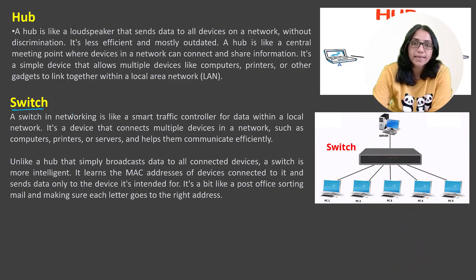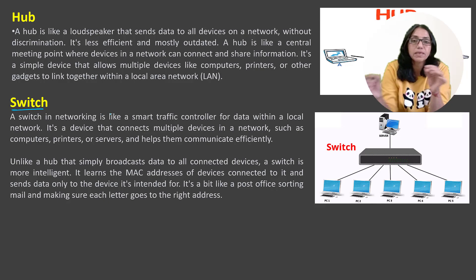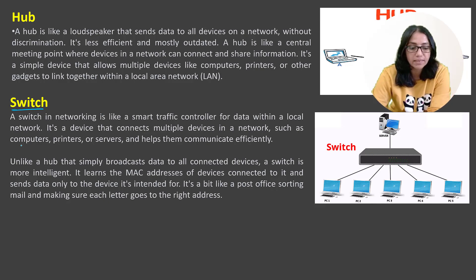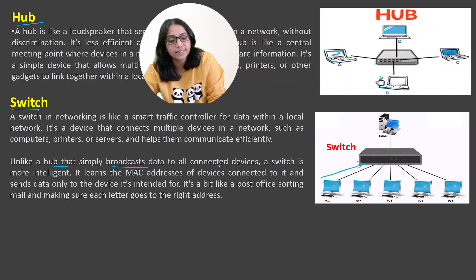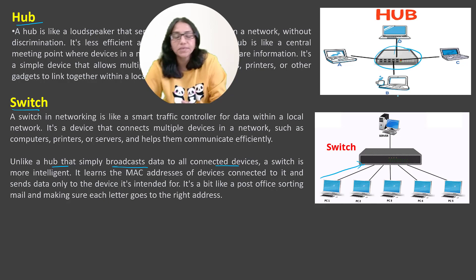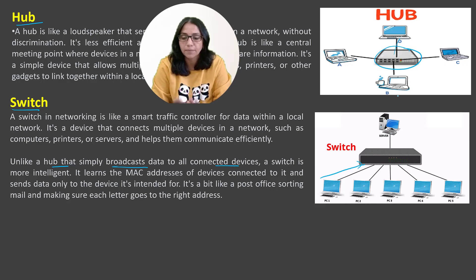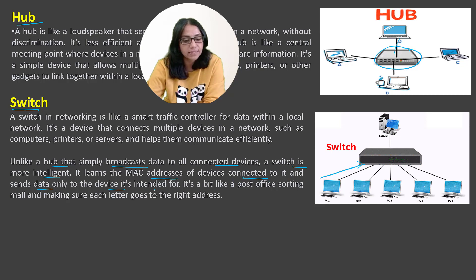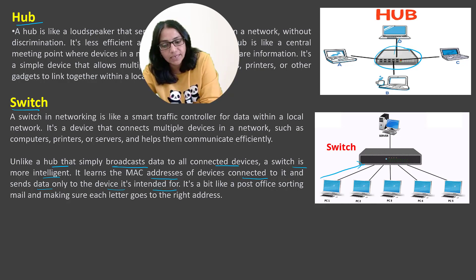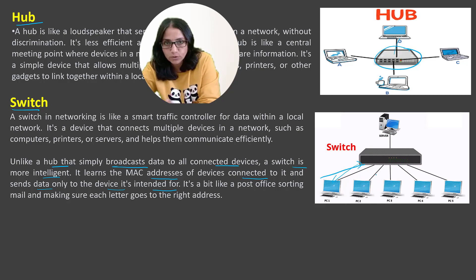What is the switch? It is also a network device. Local area networks have multiple devices connected — computer, printer, server, and others. If we compare it to the hub, the hub simply broadcasts data to all connected devices. But the switch is more intelligent. It learns the MAC addresses of the devices connected to it and sends data only to the device it is intended for. Every device has a MAC address, and only the device with the matching address receives the data.